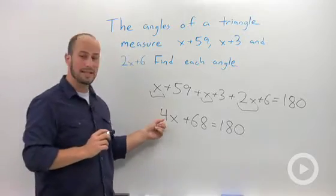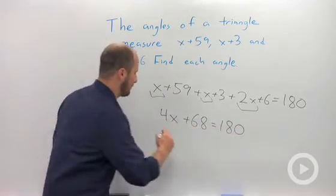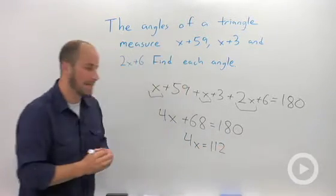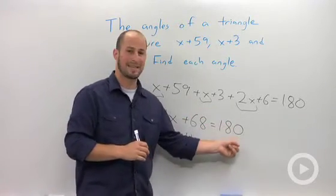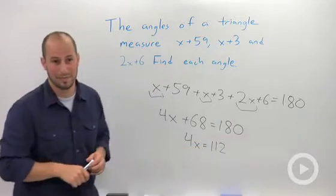We then want to isolate our variable, get our x by itself. So we need to subtract 68. 180 minus 68 is 112. If you want a shortcut you could subtract 70 which is 110. 68 is 2 less than that, so we want to bump you back up to 112.